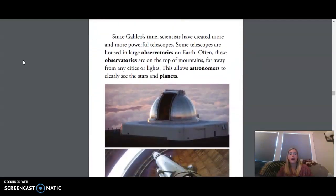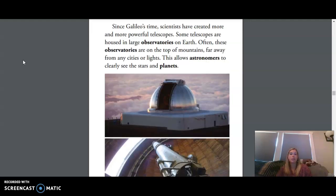Since Galileo's time, scientists have created more and more powerful telescopes. Some telescopes are housed in large observatories on Earth. Often these observatories are on top of mountains, far away from any cities or lights. This allows astronomers to clearly see the stars and planets.